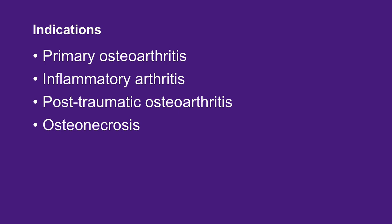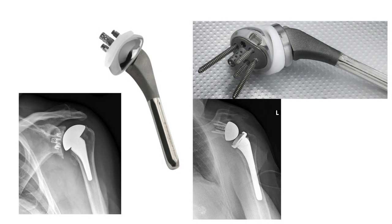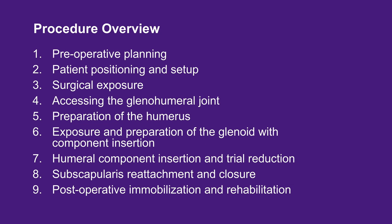These are a partial list of the more common indications for total shoulder arthroplasty. The decision to proceed with anatomic total shoulder arthroplasty versus reverse total shoulder arthroplasty is based on a careful assessment of multiple clinical and radiographic factors. In patients with glenohumeral arthritis and an intact, well-functioning rotator cuff, anatomic total shoulder arthroplasty is generally the procedure of choice.